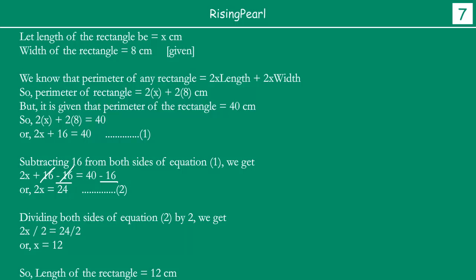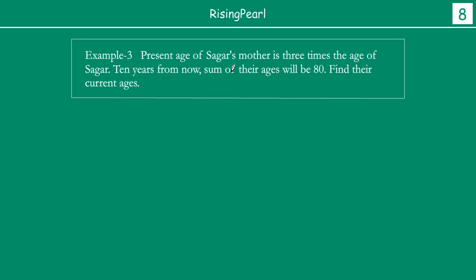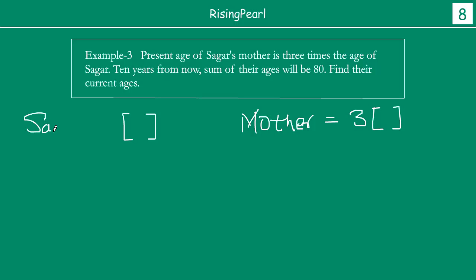Now we are going to talk about the last example. The present age of Sagar's mother is 3 times the age of Sagar. So if this is Sagar's age, his mother's age is 3 times Sagar's age. We don't know what Sagar's age is, but his mother is 3 times as old. It is also given that 10 years from now, the sum of their ages will be 80.